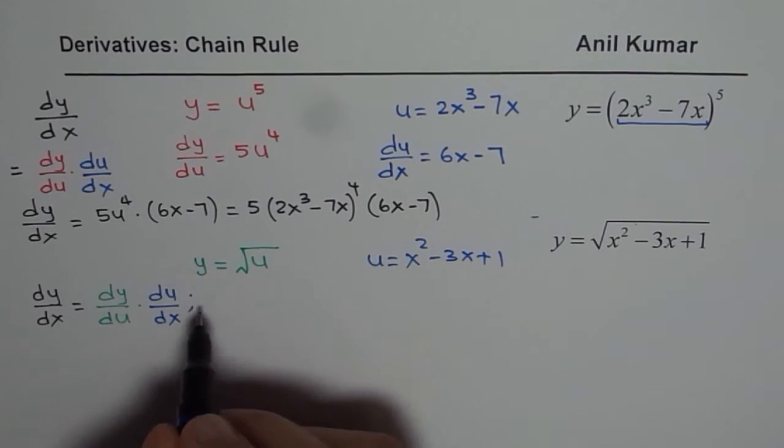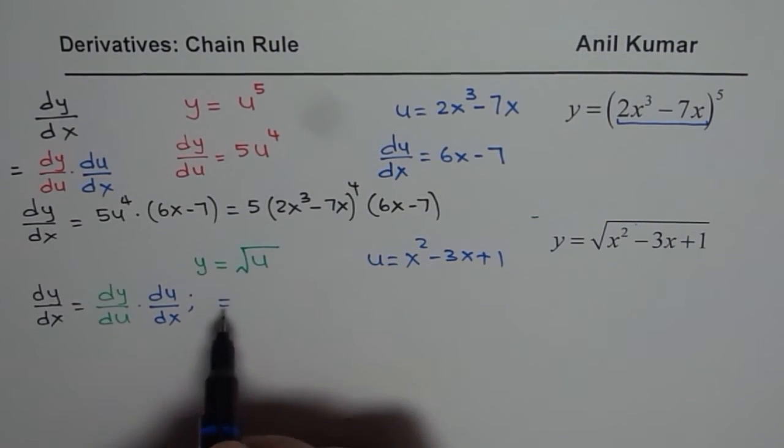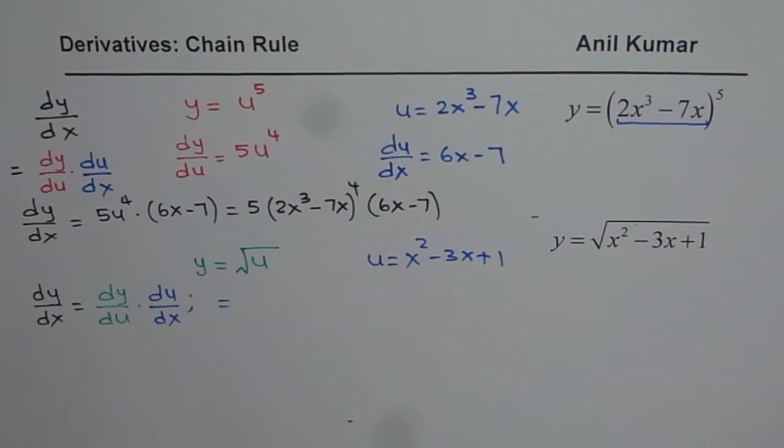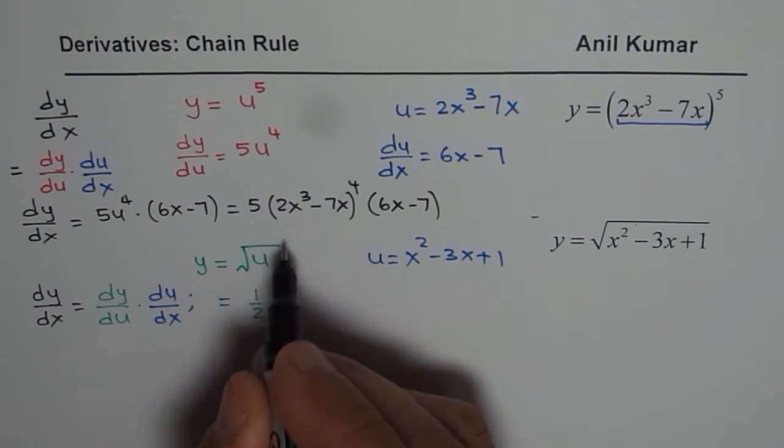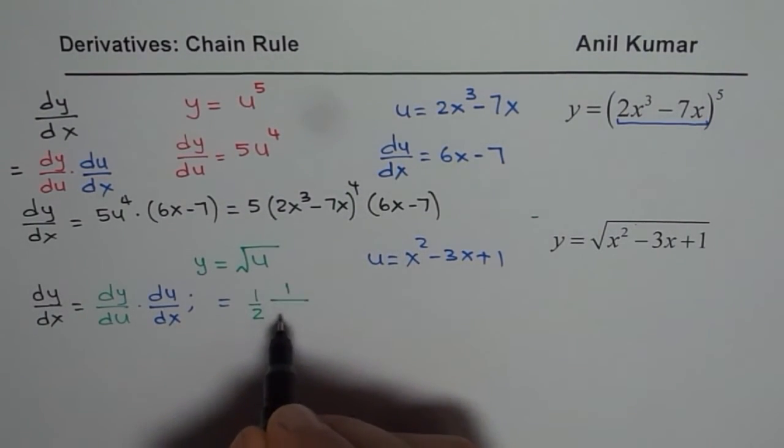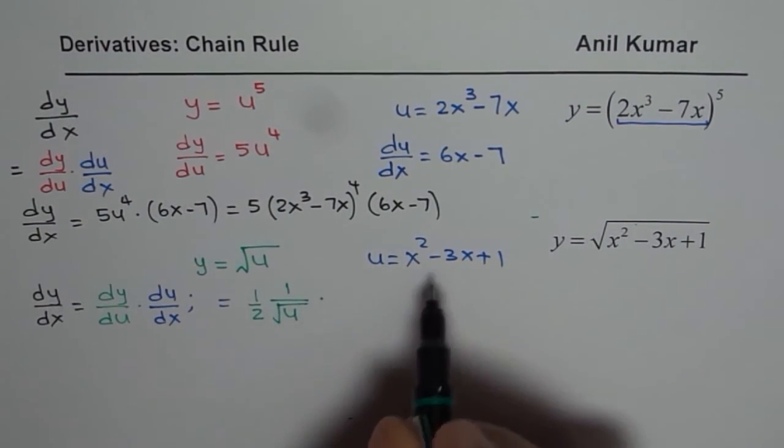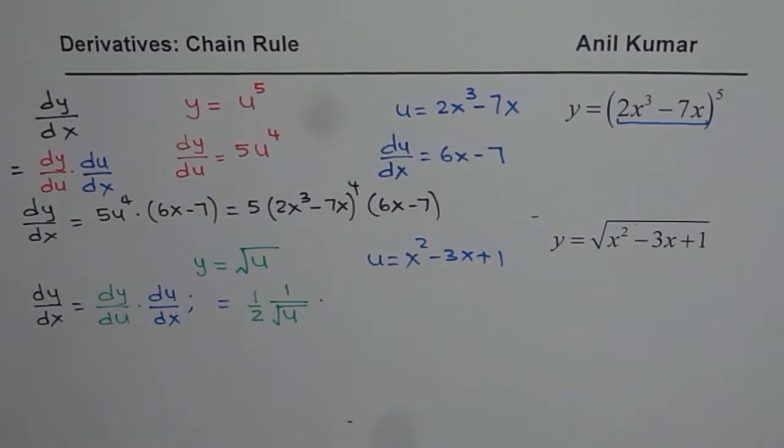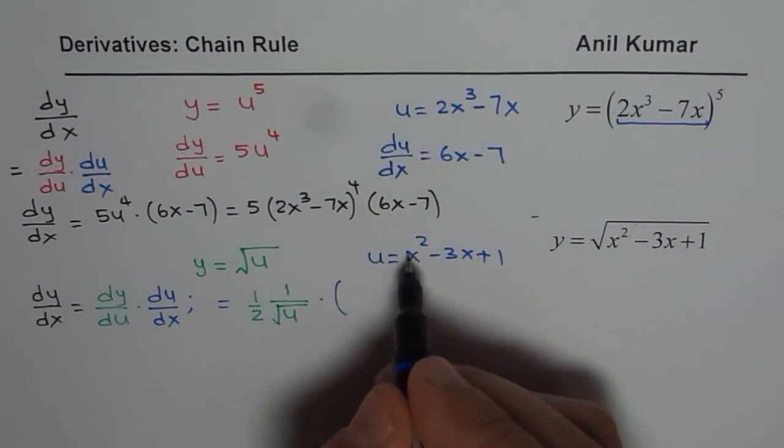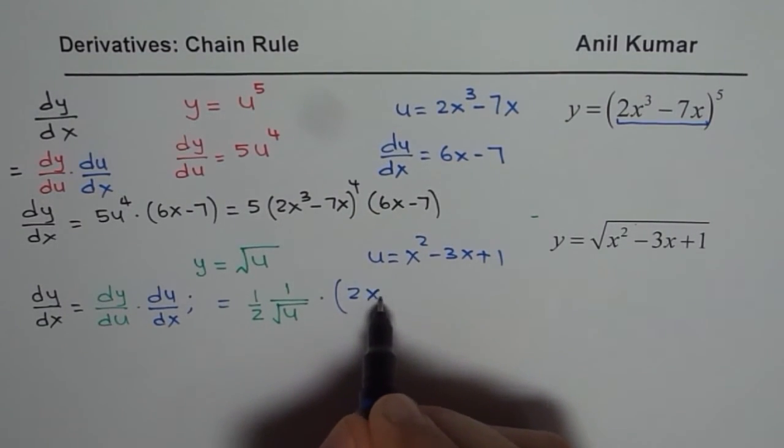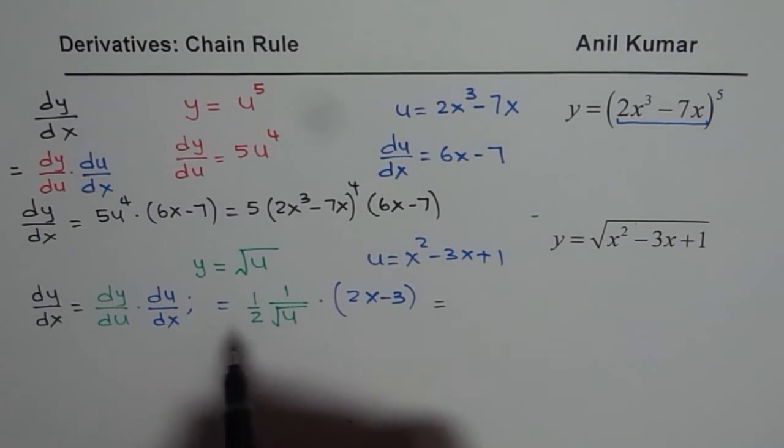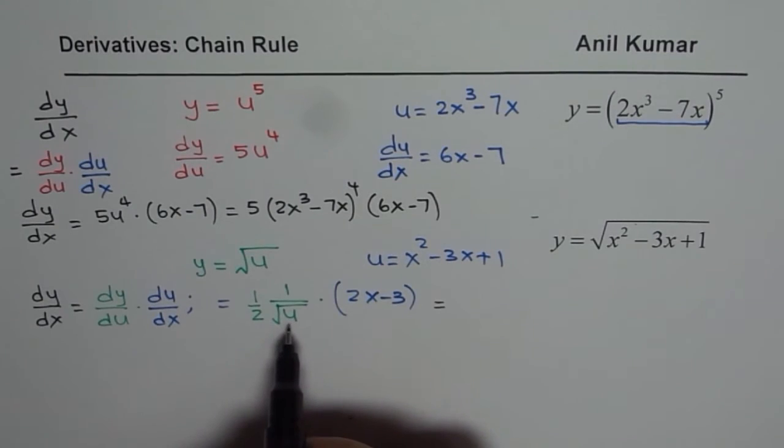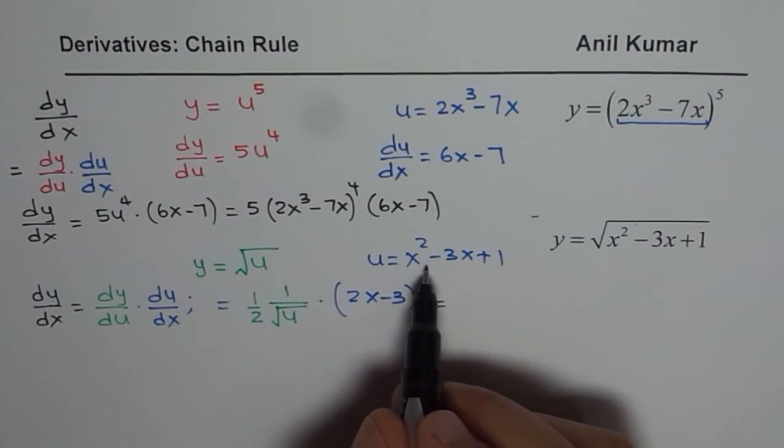We could actually go ahead and say, dy/du is half of u to the power of minus half, which I could write as 1 over square root of u, times du/dx. du/dx is 2x - 3, correct?